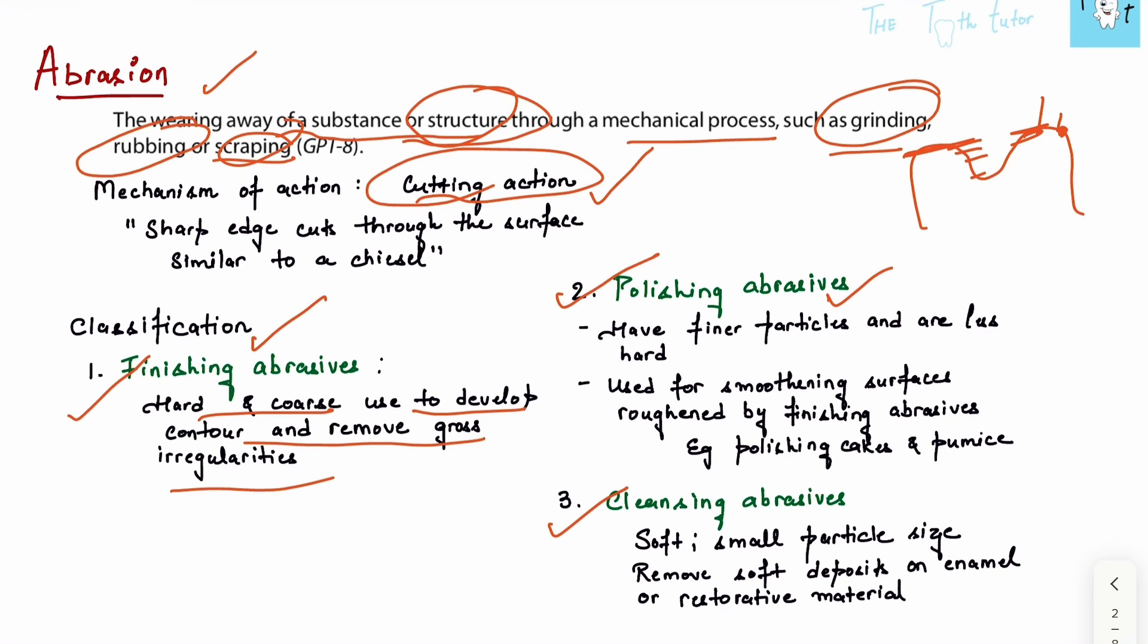Then we have polishing abrasives, which are finer and less hard. They're used for smoothening surfaces. This is done after we're done with abrasion - after removing larger irregularities, we remove the smaller, very finer irregularities using polishing abrasives. Cleansing abrasives are very soft with small particle size and remove soft debris on enamel or restorative material.